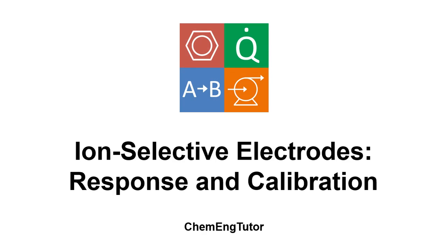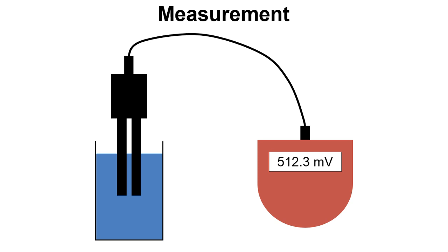In this video we're going to look at the response and calibration of ion-selective electrodes. When we take a measurement of a sample or solution or standard with our ion-selective electrode, we get a reading in millivolts and this is the potential difference across the ion-selective electrode and the reference electrode.